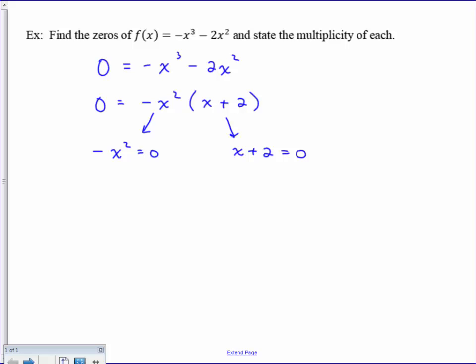So in other words, here, the only way that negative x to the second could equal zero is if the x part equaled zero.